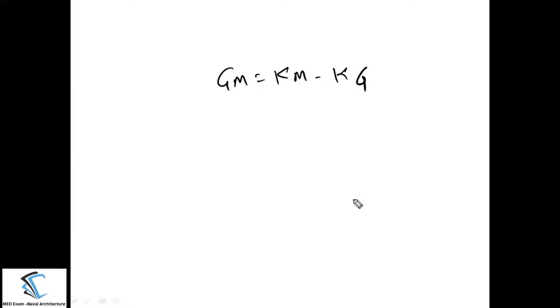Why are we doing this? The stability of the ship depends on the metacentric height. For small angle stability, the distance KM remains constant. If you want to find the value of GM, you need to know KM — which we assume is constant for a particular ship — and then GM equals KM minus KG. So GM depends entirely on the location of the centre of gravity from the keel.